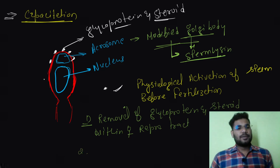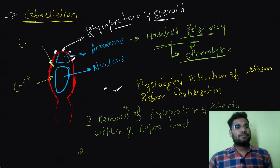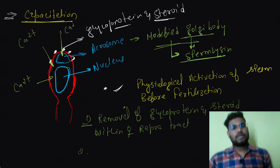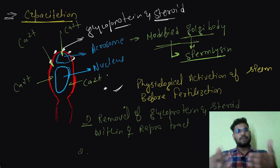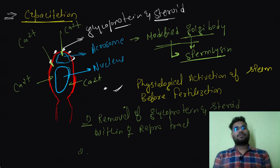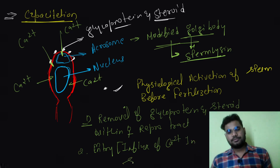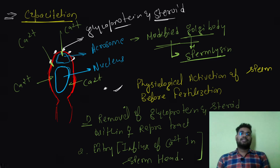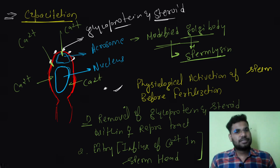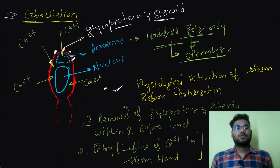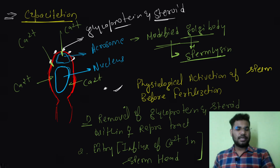The second change in capacitation is the influx of calcium ions into the sperm head from the female reproductive tract. When calcium ions enter, they activate the sperm — sperm movement increases and sperm become activated. After capacitation, the sperm becomes active and now has the ability to fertilize the oocyte. This is the first part; in the next part we will see other changes which take place in the sperm.